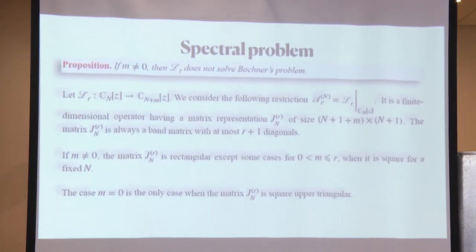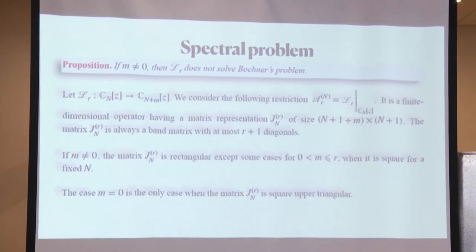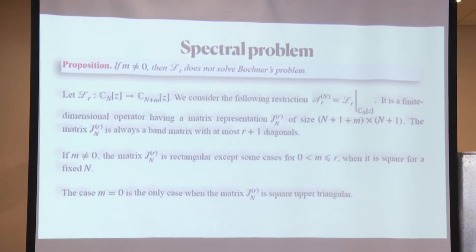This matrix is a band matrix of at most R+1 diagonals. If M is non-zero it's a rectangular matrix. When searching for polynomial solutions, we're searching for eigenvectors and eigenvalues of a given matrix. The matrix is interesting because its coefficients are polynomials in the index of a certain degree. The most interesting situation is a triangular matrix, which appears exactly in the case when M is between 0 and R — and we have many examples where this triangular matrix gives discrete orthogonal polynomials.